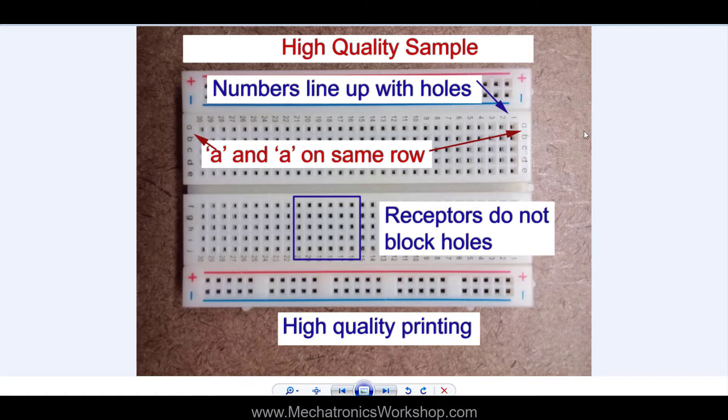So let's start with a high quality sample here. Notice that the numbers line up with the holes. So number one lines up pretty good here, number two lines up pretty good with that column of holes. That's one thing that we're going to see in the defective ones - that they don't line up well.